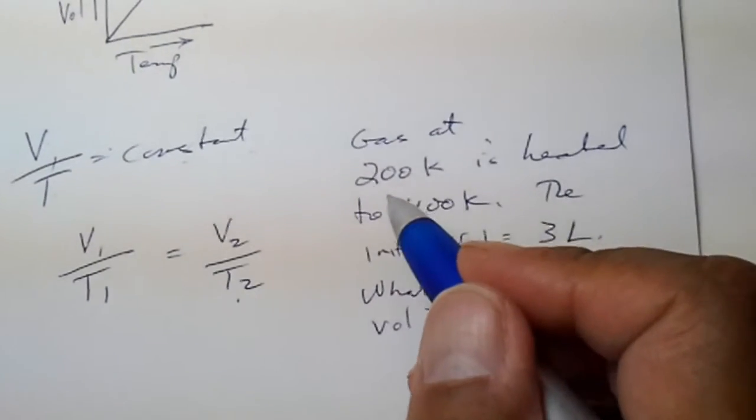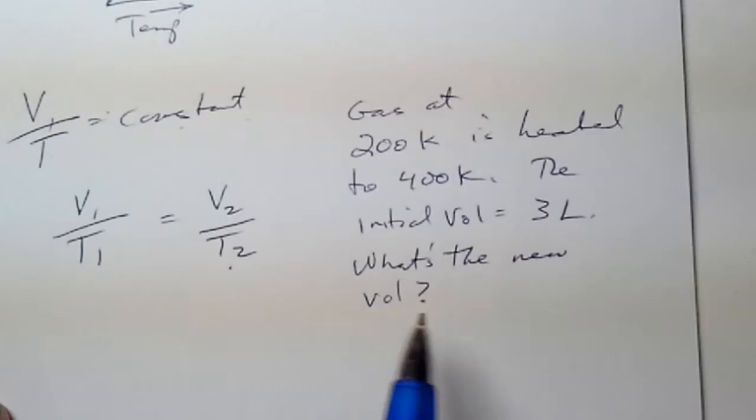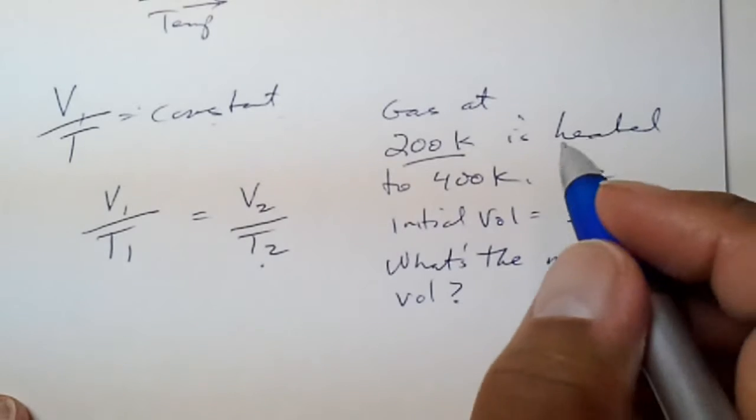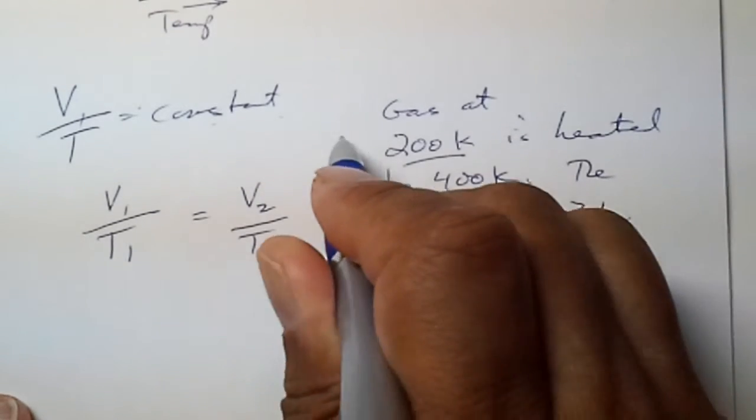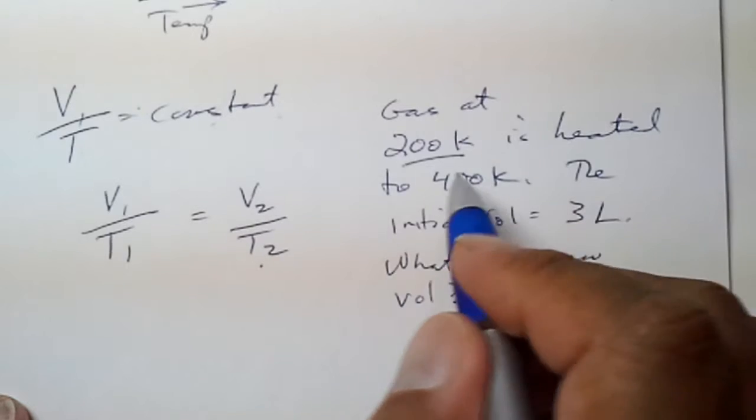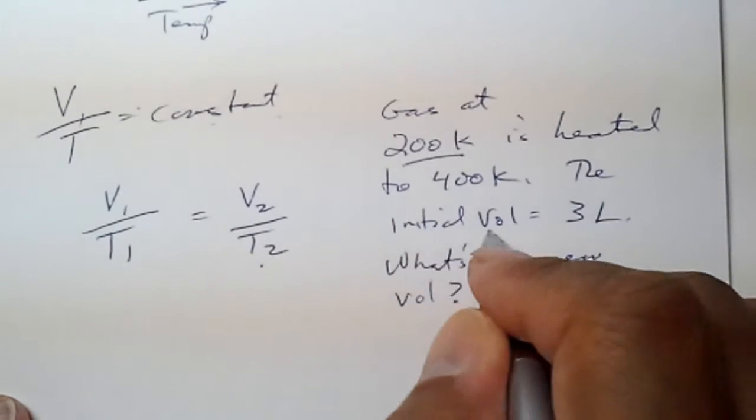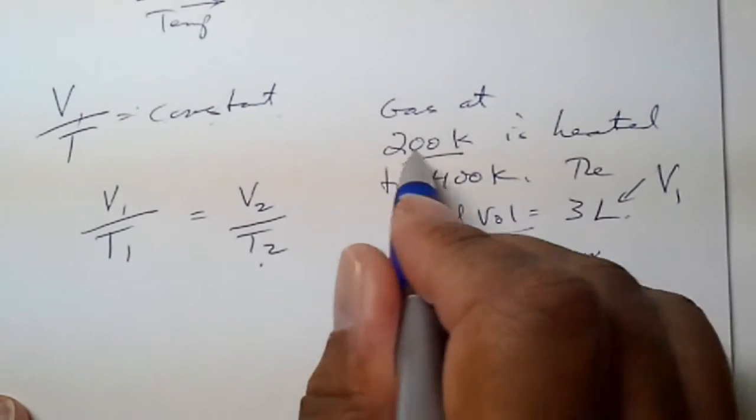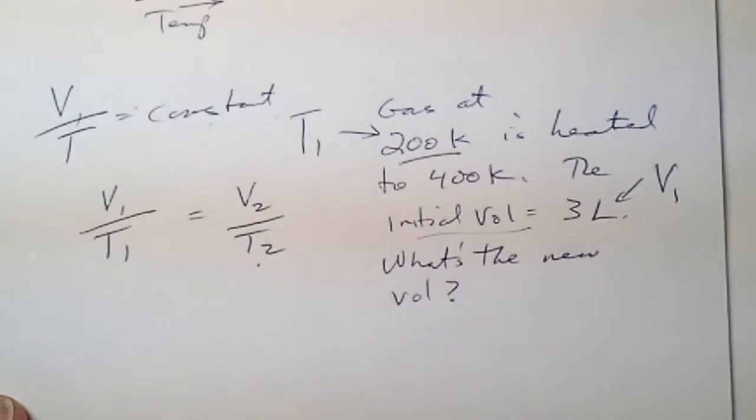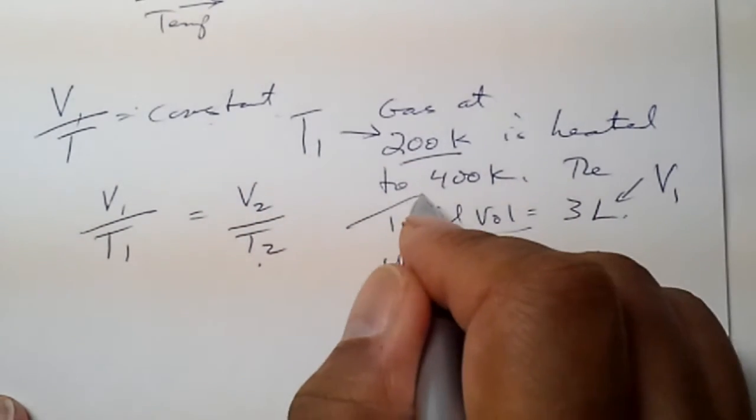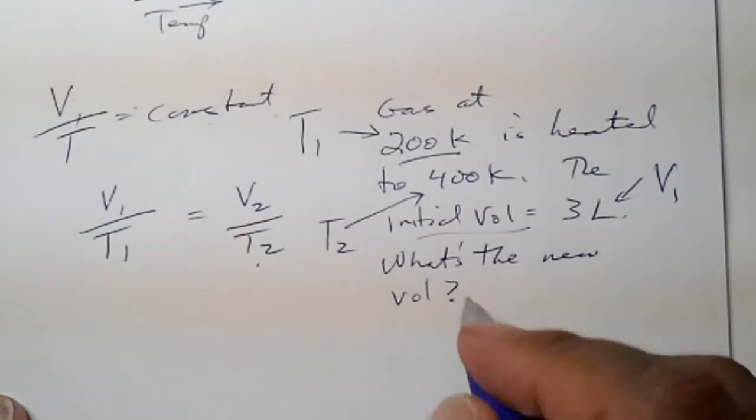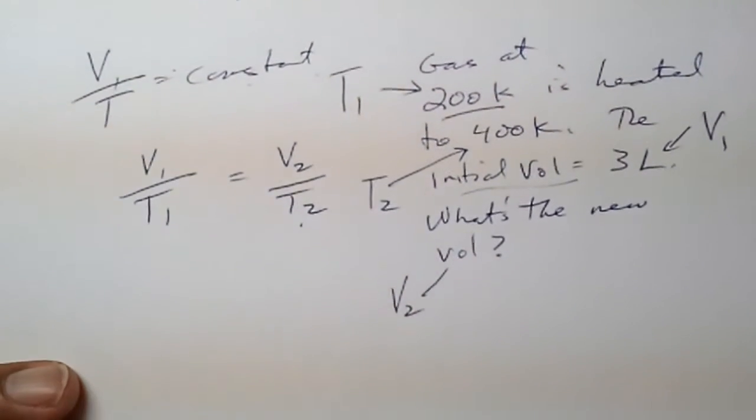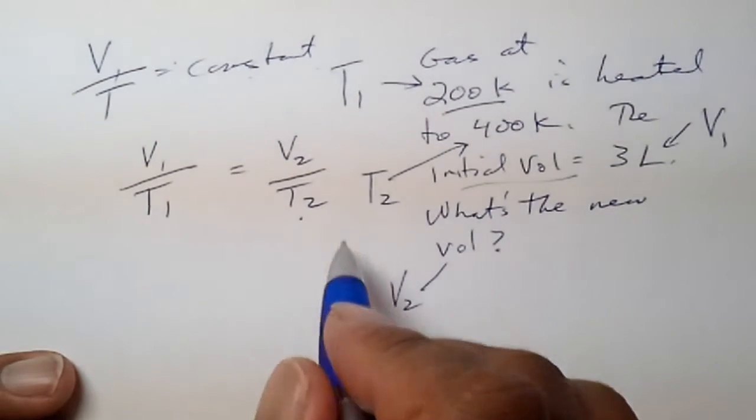Regardless of how the problem is worded, and of course it may be a little more challenging than this, we look for our V1. This is our initial T1. V1 here, initial volume, would be 3 liters. Our initial temperature is 200 degrees Kelvin. We have a second temperature in here. And what is our new volume? Obviously, now this would be our V2.